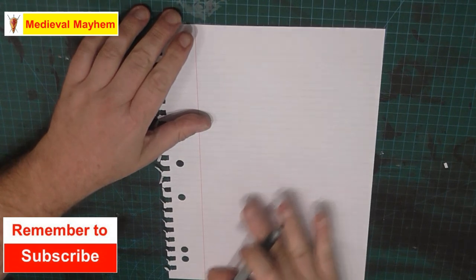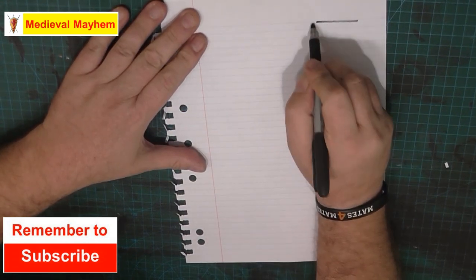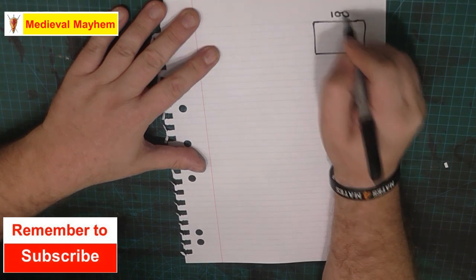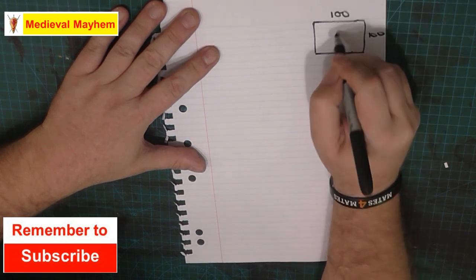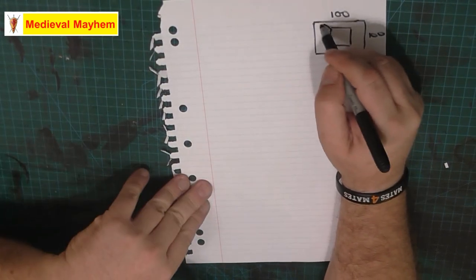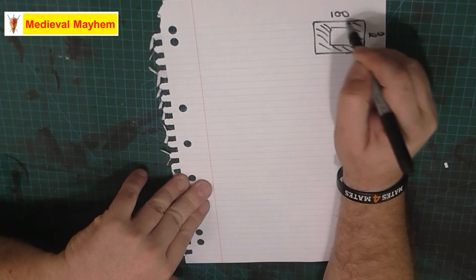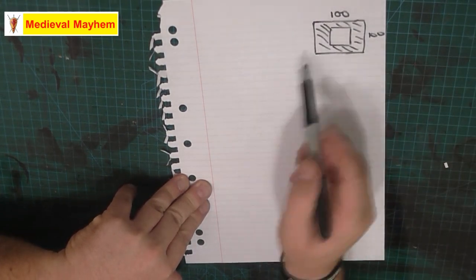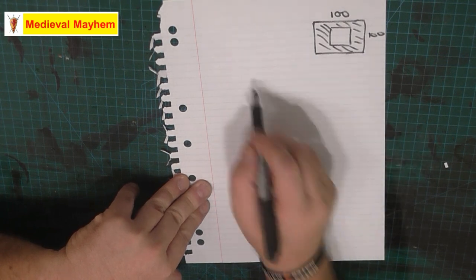Alright, so the plans for the archery target. I purchased an archery target which is 100 by 100 centimeters. So that is the backstop for the paper targets. What I want to do is make a wooden target frame to hold this up. This is going to be in two parts.